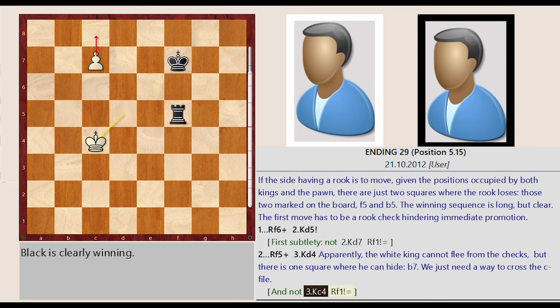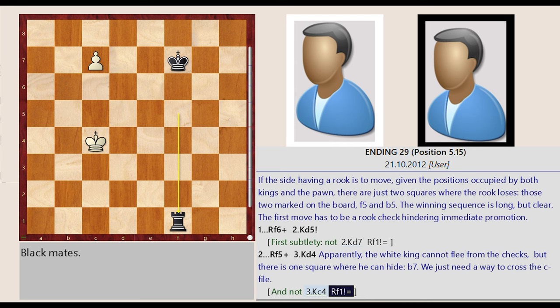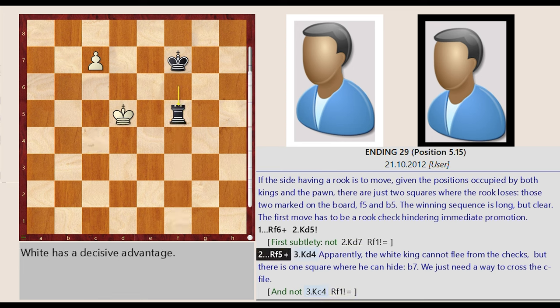And not King d5 c4. Rook f5 f1. First subtlety, not King d4.